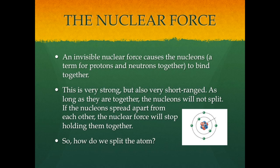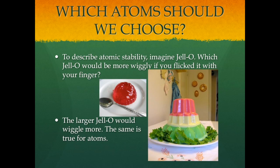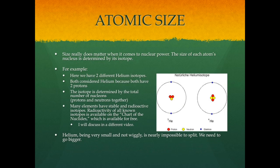So how do we get these protons to separate from each other? How do we split the atom? To describe atomic stability, imagine Jell-O. If you have two Jell-O pieces of different sizes and flick one with your finger, which one would jiggle more? Of course, the larger Jell-O would. The same is true for atoms. When we decide which atoms to use for fission, we need to really consider size. The size of each atom's nucleus is determined by its isotope.